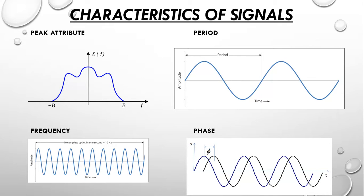Peak amplitude is the maximum excursion of the wave from the zero point. Peak-to-peak amplitude is the distance from the negative peak to the positive peak. In the case of a sine wave, the peak-to-peak value is exactly twice the peak value because the waveform is symmetrical, though this is not necessarily the case with all waveforms.